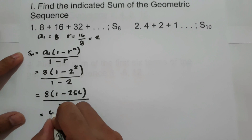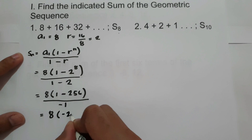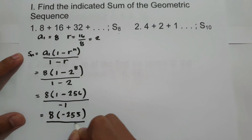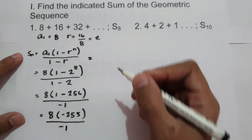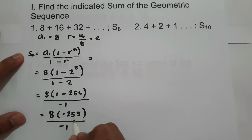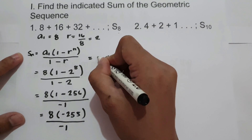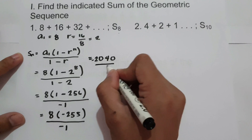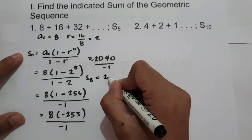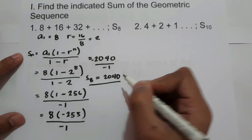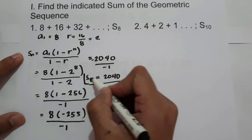Let us simplify: 8 times (1 minus 256) is 8 times negative 255, which equals negative 2,040, divided by negative 1. Therefore, the sum of the first 8 terms is 2,040. Negative 2,040 divided by negative 1 is 2,040, and this will be our final answer.